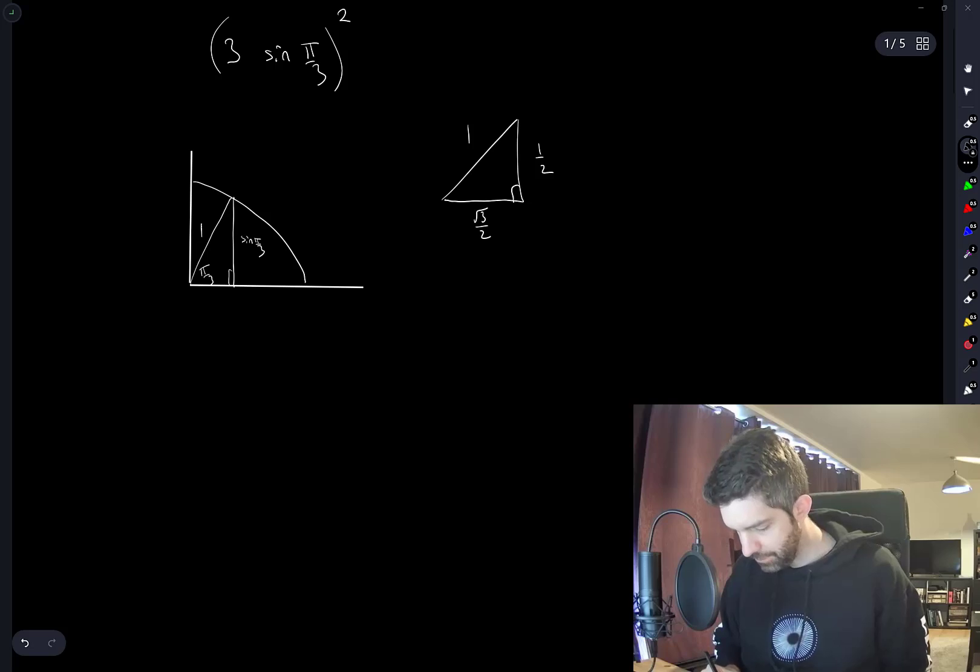So I think sine pi over 3 is equal to root 3 over 2.